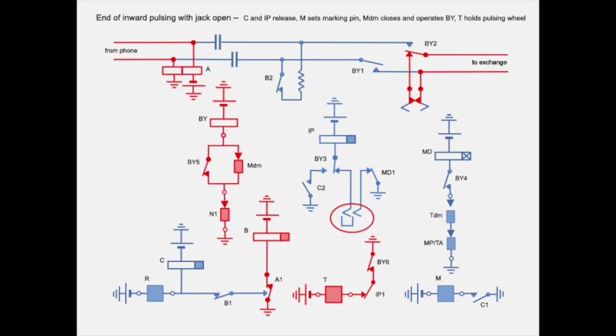Contact N1 closes as soon as the ratchet wheel starts rotating. Let's assume that the jack plug in the middle is removed to open the loop of relay IP. Relay C releases at the end of the incoming pulse train. Marking magnet M is then deactivated and the contact MDM closes. The marking lever drops and sets a marking pin.